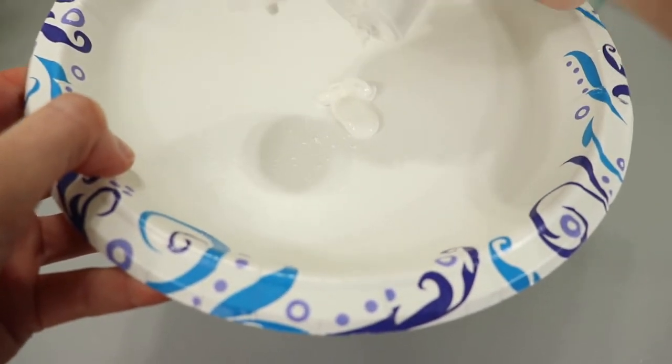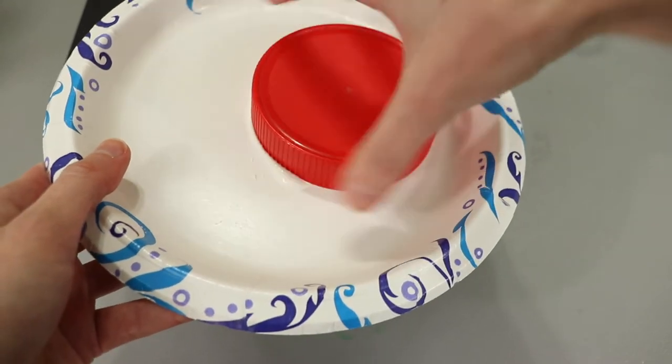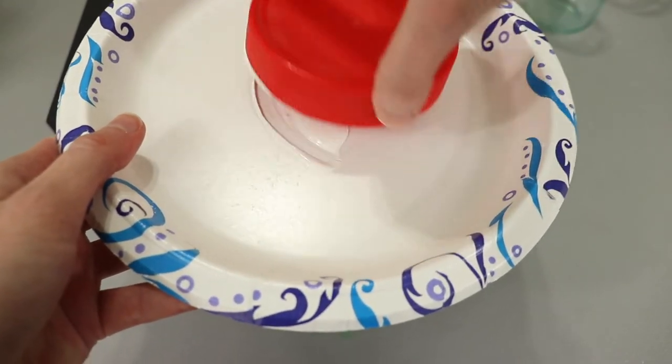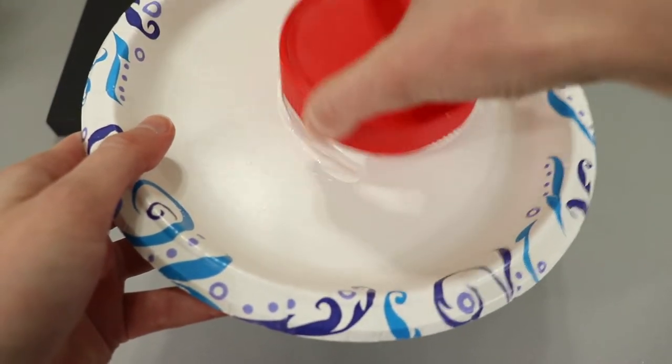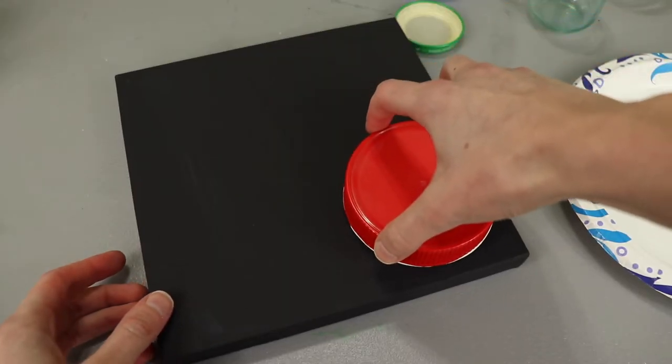To make the bubbles I put some white paint on a plate, again using an acrylic Apple Barrel paint and this one happens to be gloss. Then I dipped the edge of my lid into the white paint making sure I got paint all along the rim and pressed it onto my canvas like a stamp.